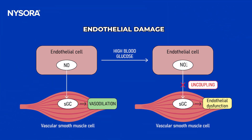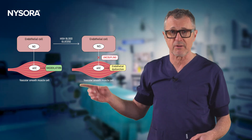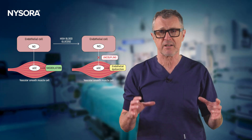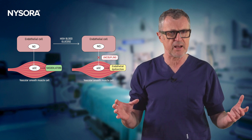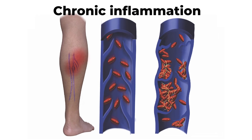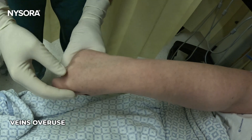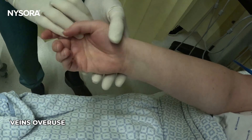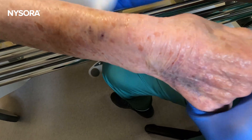Endothelial dysfunction: high glucose levels damage the inner lining of the veins, reducing nitric oxide production and making it harder for the veins to dilate. Chronic inflammation: ongoing inflammation in diabetic patients further weakens the vein walls, making them sclerotic and less visible or palpable. These combined effects result in veins that are fragile, sclerotic and less easily detectable.